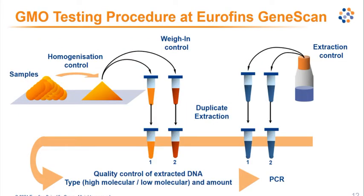How are samples processed at our lab when a GMO analysis is requested? The sample material is first homogenized to a fine powder, and a small portion of this powder is used for DNA extraction. The DNA extraction as well as the PCR analysis afterwards is carried out in duplicate, with several controls monitoring the efficiency of the extraction.